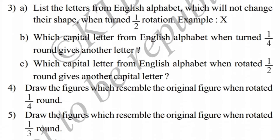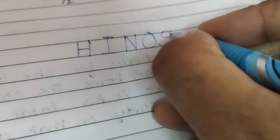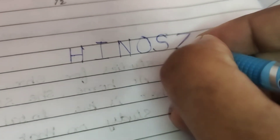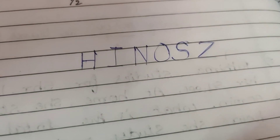Third main: List the letters from the English alphabet which will not change their shape when turned half rotation. Example: X. Alphabets that remain the same after half rotation — capital H, capital I, capital N — these remain the same after half rotation — O, S, and Z. These alphabets all look the same after half rotation.